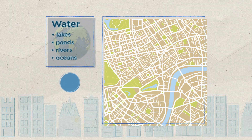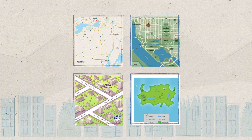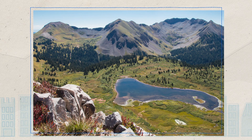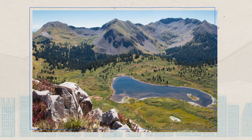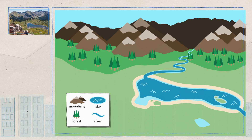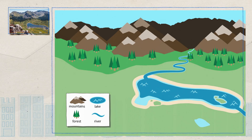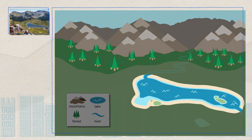Many maps show land and water features in ways that are similar to real life. Here is a picture of an area of land viewed from high above. And here is a map that shows the same area's land and water features. You may notice a lot of green, blue, and brown. Blue usually represents water, and this area has a lake. Notice that a symbol has been drawn in the basic shape of a lake, colored blue.